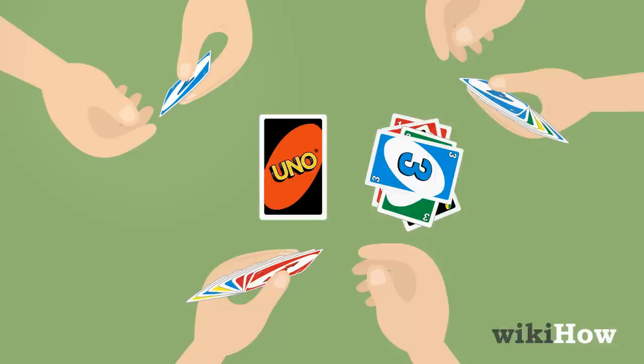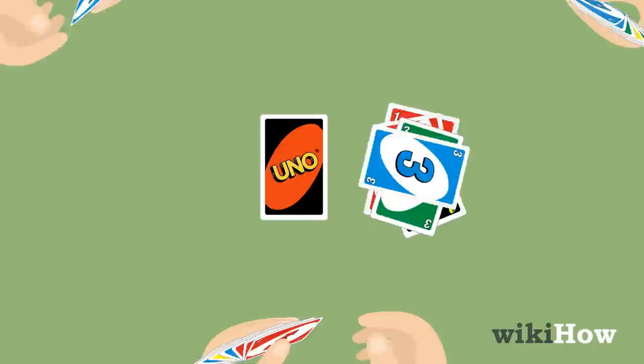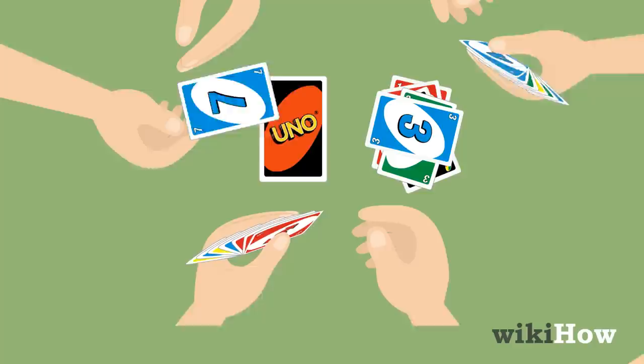As soon as a player is down to just one card, they must yell Uno before anyone else notices. If anyone else says Uno first, the player must draw two cards from the draw pile.